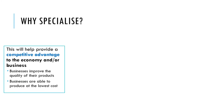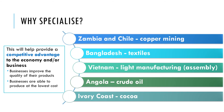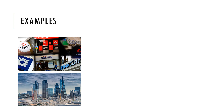Why would countries, individuals, or businesses specialize? It can provide a competitive advantage because it can improve the quality of their products or enable them to produce at the lowest cost. Examples include Zambia and Chile specializing in copper mining, Bangladesh in textiles, Vietnam in light manufacturing, Angola in crude oil, the Ivory Coast in cocoa, and the City of London in banking services, where expertise enables workers to specialize and gain a competitive advantage over other financial cities.